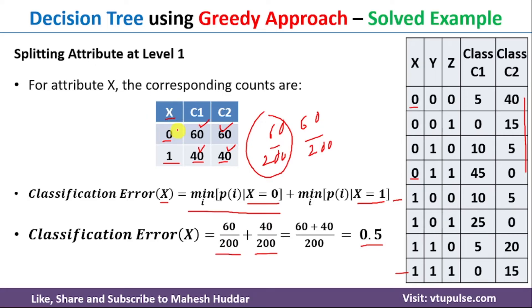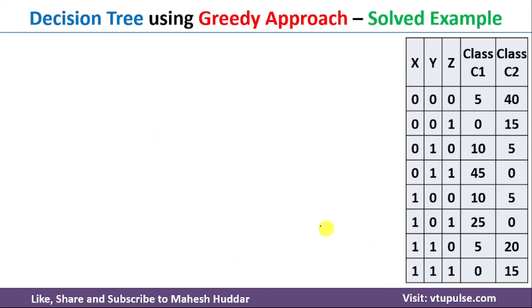We were able to calculate the classification error for X. The value of classification error for X is 0.5. Similarly, we will calculate the classification error for Y.